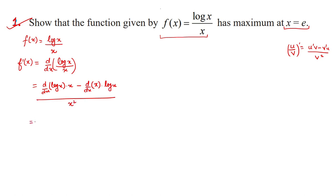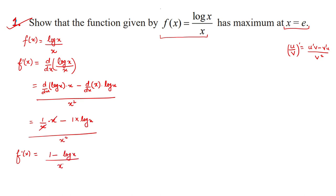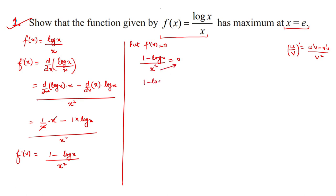Applying the quotient rule: d/dx(log x) times x, minus d/dx(x) times log x, all divided by x squared. The derivative of log x is 1/x, and the derivative of x is 1. So f'(x) = (1/x · x − 1 · log x) / x² = (1 − log x) / x². Setting f'(x) = 0 gives 1 − log x = 0, so log x = 1, which means x = e.